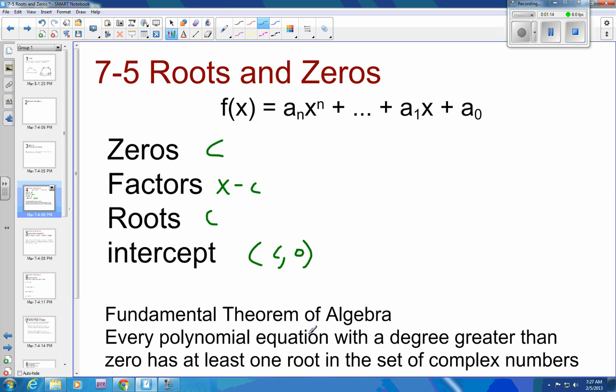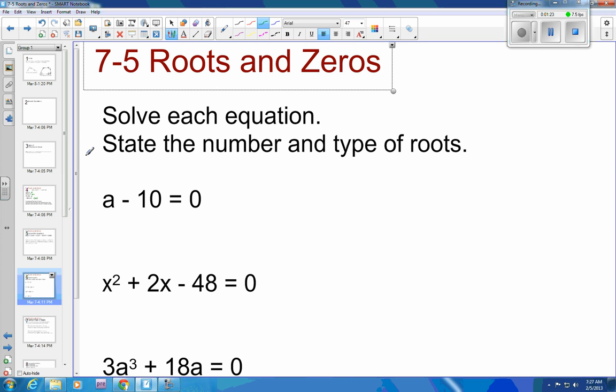Know that every polynomial equation with a degree greater than zero has at least one root in the set of complex numbers. And so with that in mind, let's look at some of these equations. So this has the exponent, it's a degree greater than zero, so we should have a solution. And so if we just added ten to the other side, we get that a is equal to ten and you have one solution and it is a real solution. So one and it's real.